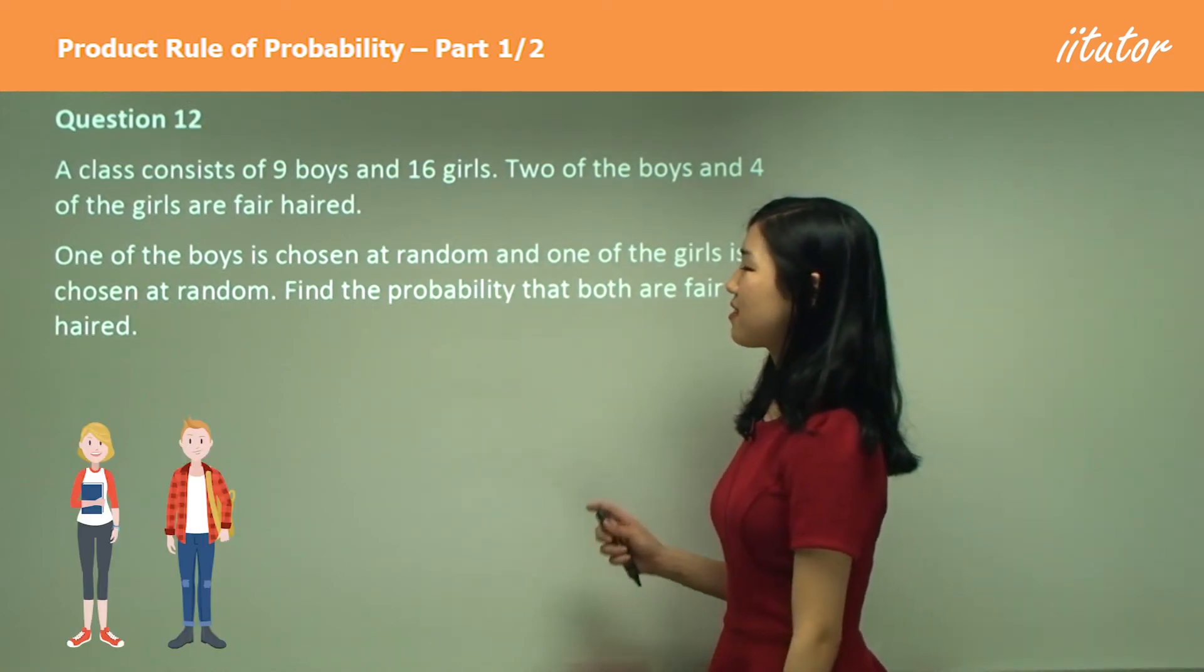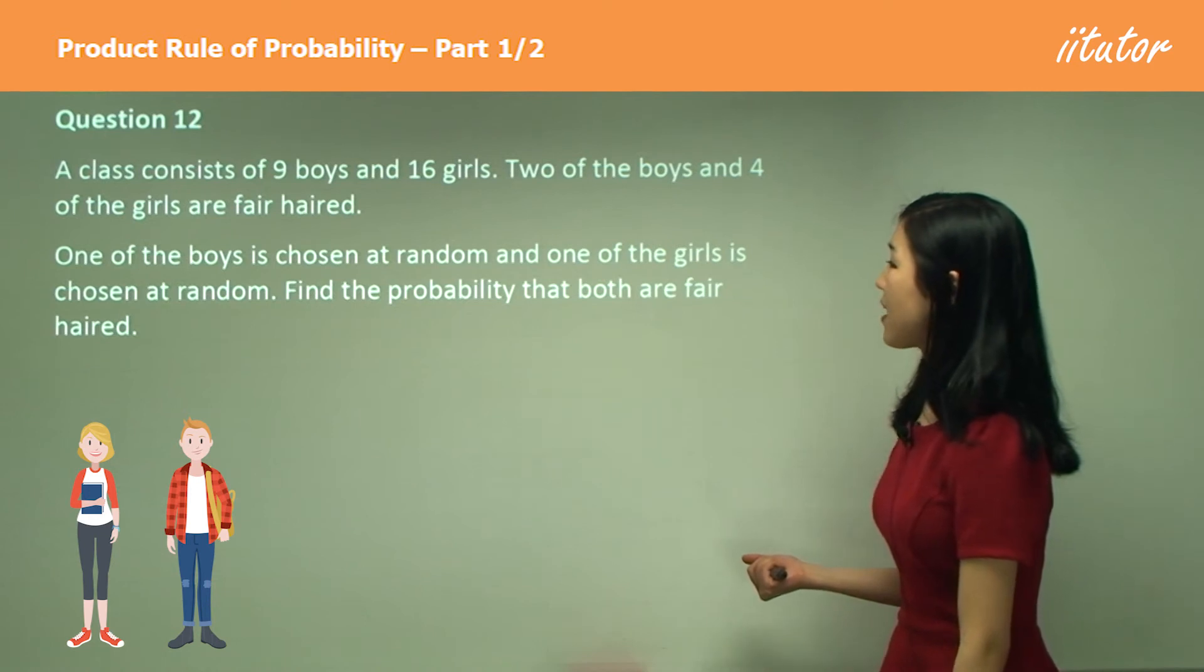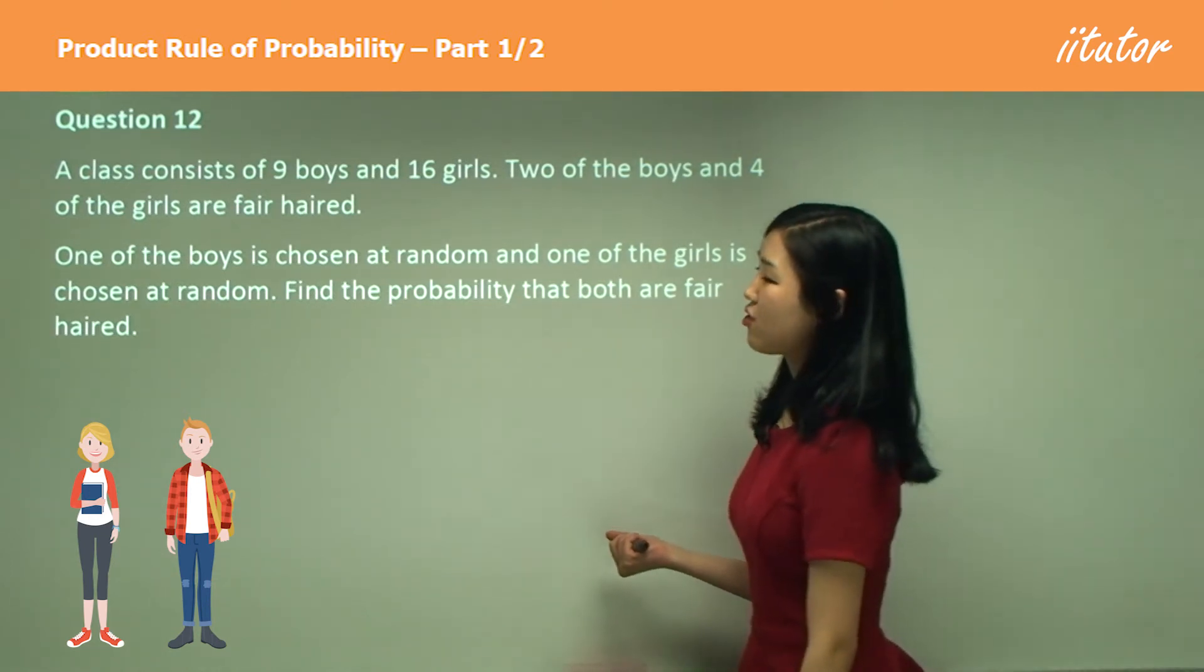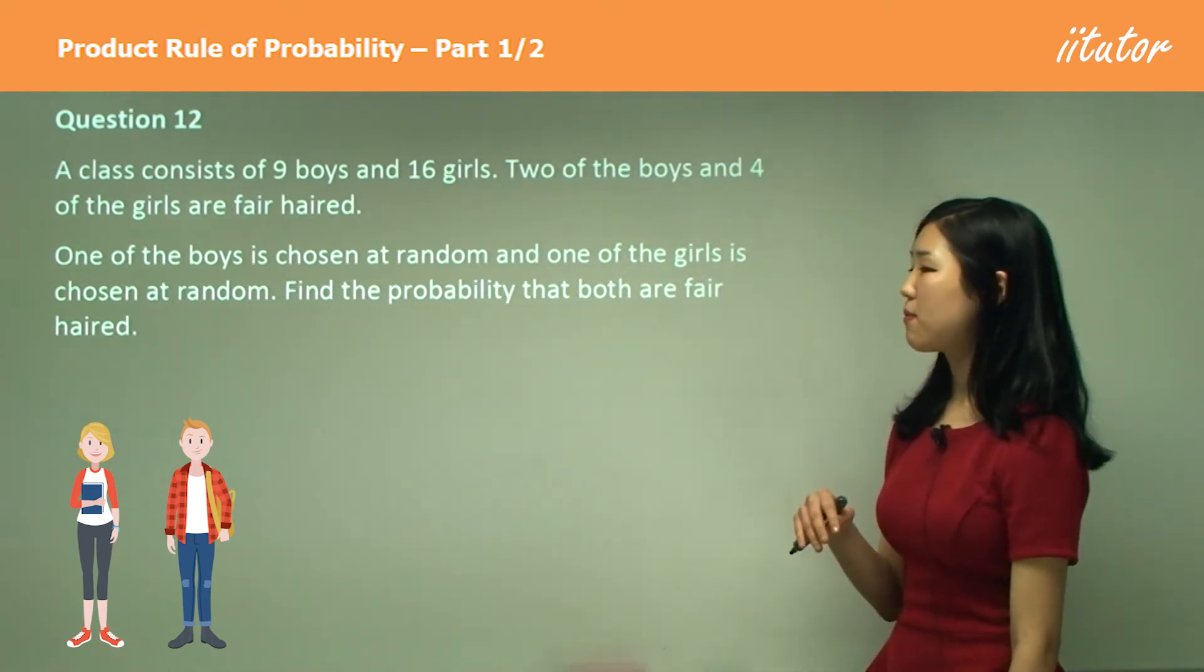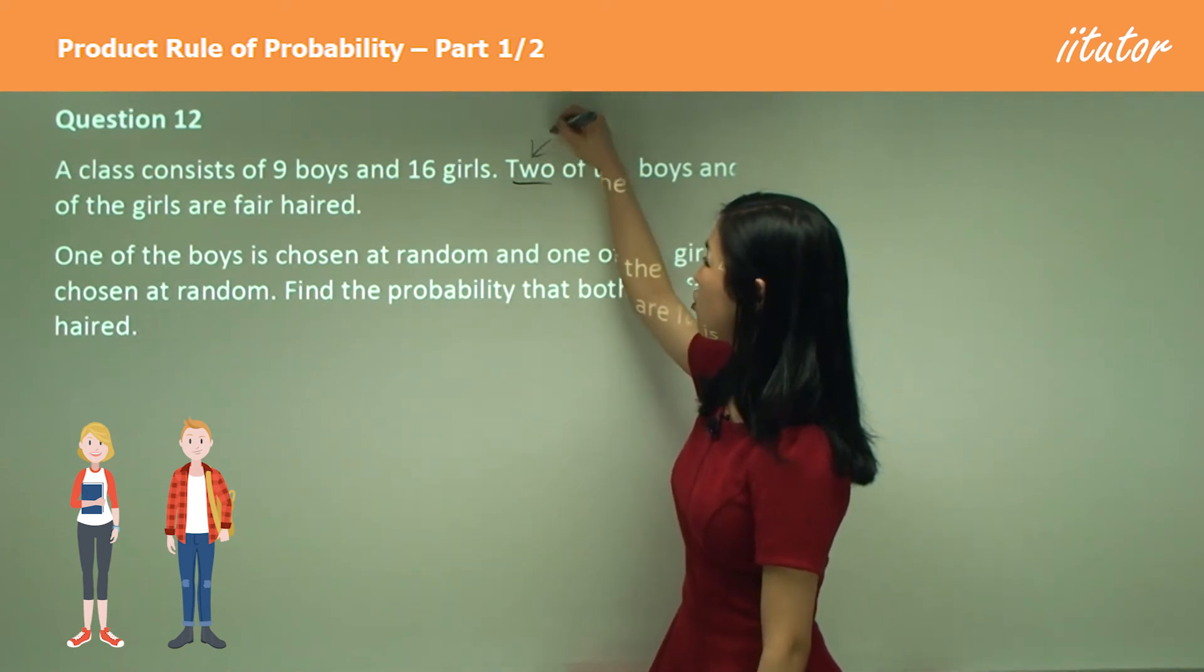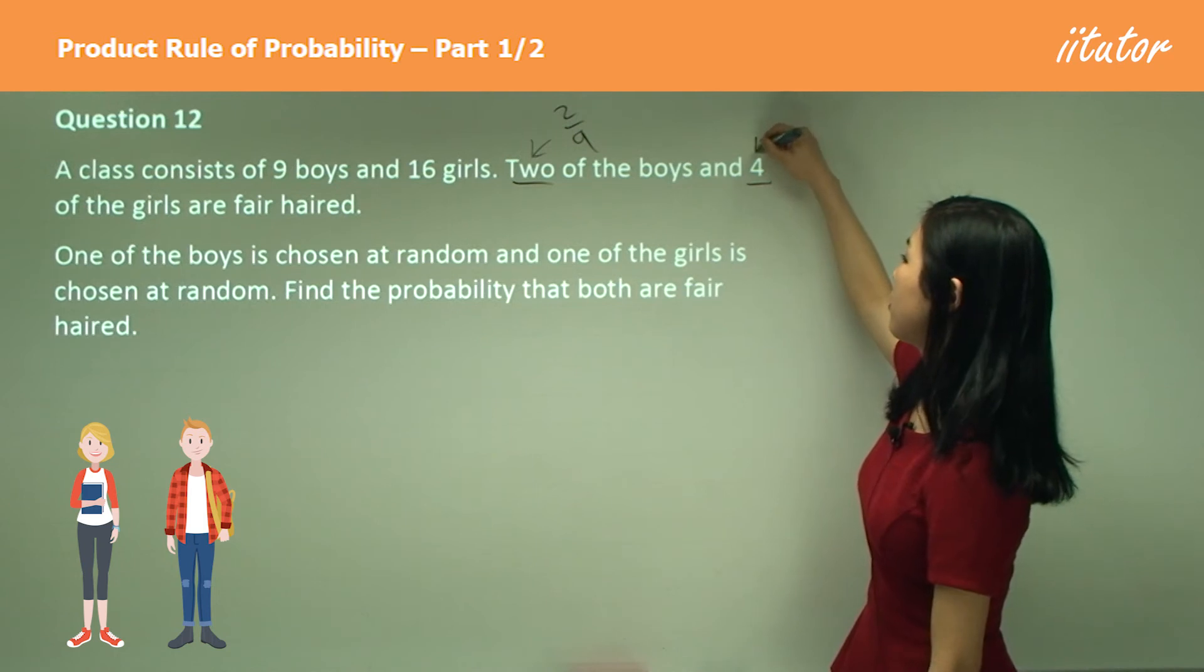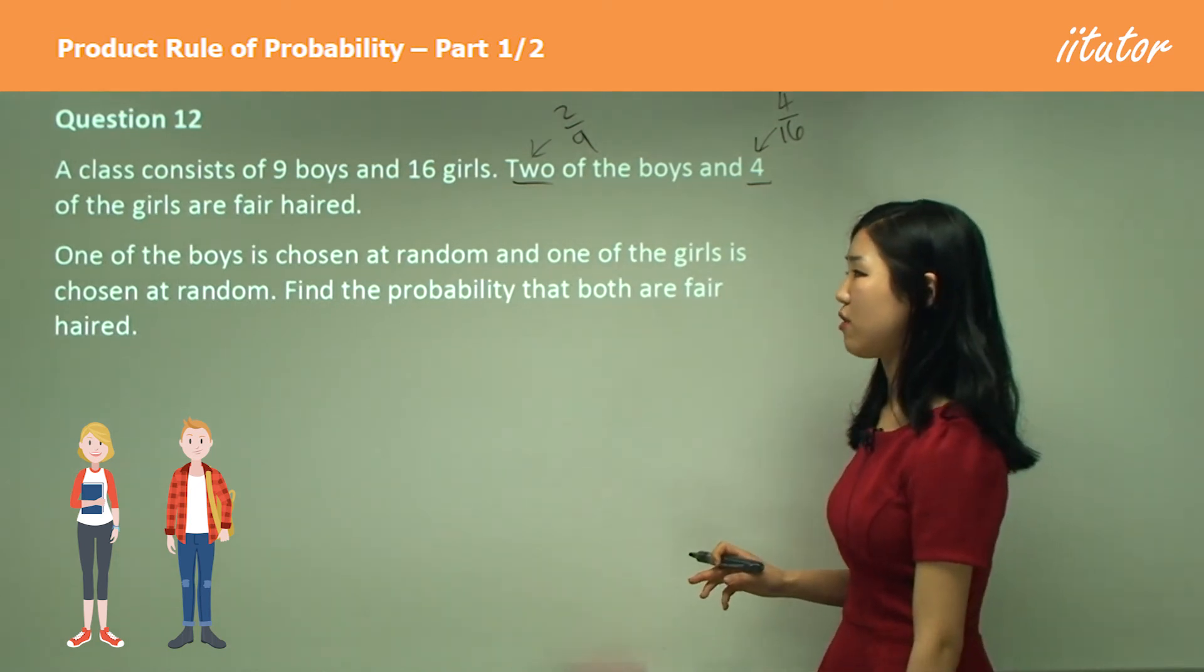Twelve, a class consists of nine boys and 16 girls. Two of the boys and four of the girls are fair-haired. One of the boys is chosen at random and one of the girls is chosen at random. Find the probability that both are fair-haired. Okay, both are fair-haired. And we know that two of the boys, so two out of the nine boys are fair-haired and four girls out of the 16 are going to be fair-haired. So those are the probability of each individual outcome.